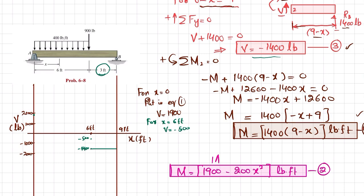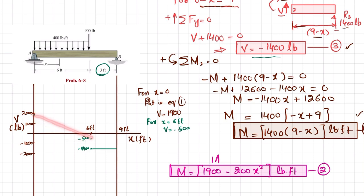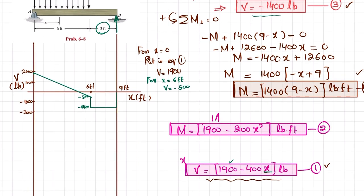The shear force diagram shows: in the first region the UDL produces a linearly decreasing line from 1900 to −500. Due to the 900-pound load, it drops to −1400, then remains horizontal to the right. At the end, Rb = +1400 brings the diagram back to zero. This completes the shear force diagram.